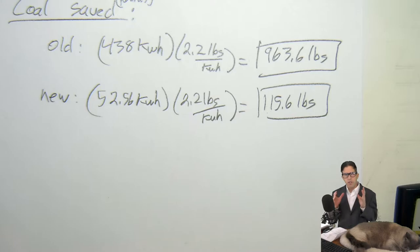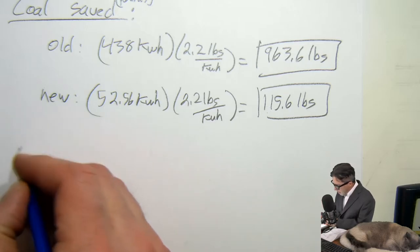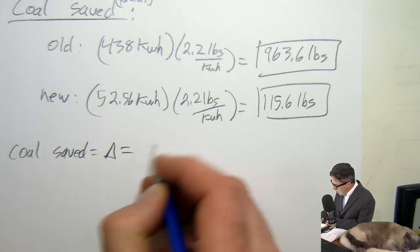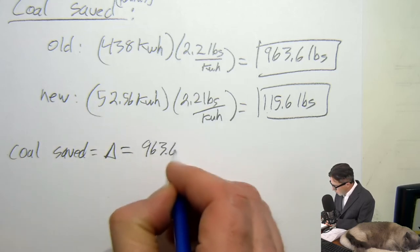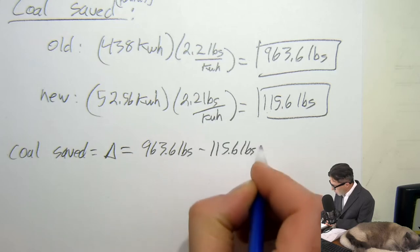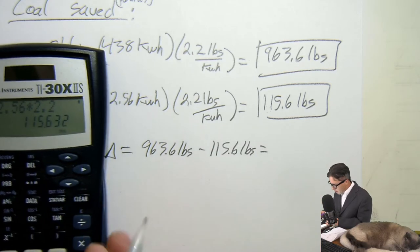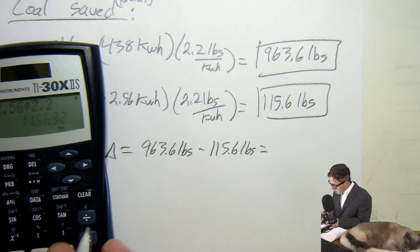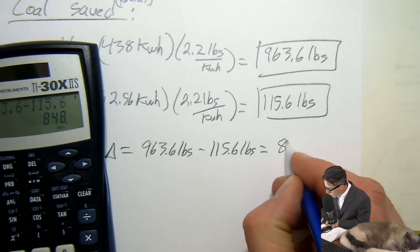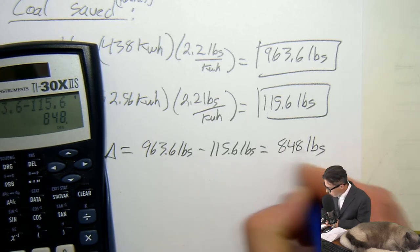And if I want to know how much coal do I save, how much coal do I not have to burn now because I replaced that one light bulb, the coal saved is the difference between those, which is 963.6 pounds minus 115.6 pounds. And 963.6 minus 115.6 is 848 pounds saved.